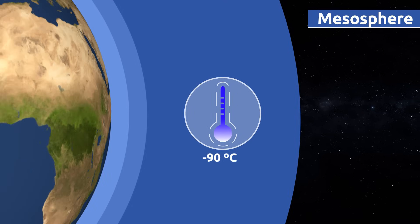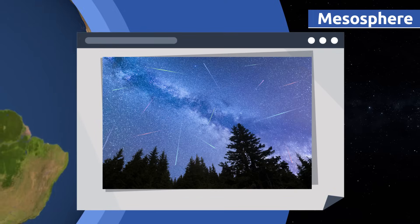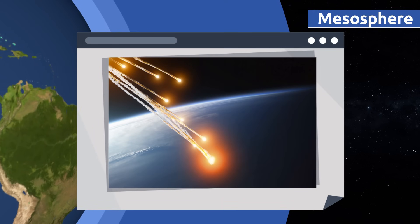The mesosphere is the coldest layer of the atmosphere. Temperatures can drop down to 90 degrees Celsius below zero. Shooting stars occur in the mesosphere. These are meteors that travel through space. As soon as they hit the mesosphere, they start burning up, leaving a tail behind them.